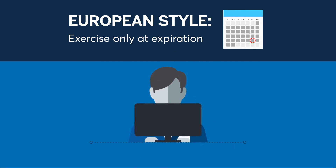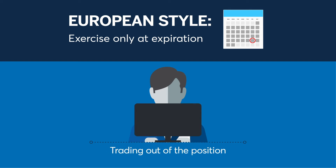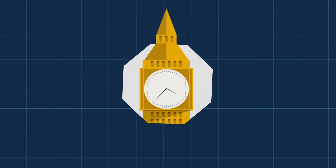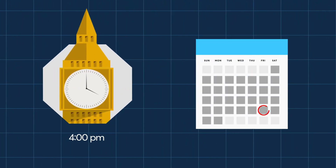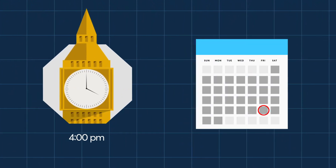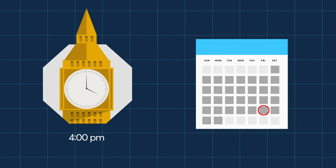However, a position could be closed prior to expiration by trading out of the position. Please be aware that trading terminates at 4 p.m. London time on the last Friday of the contract month.